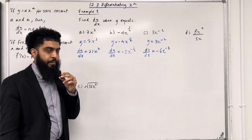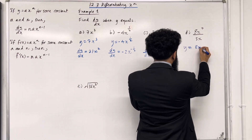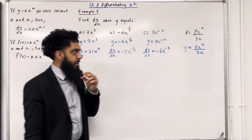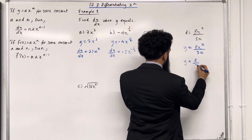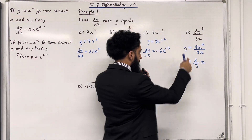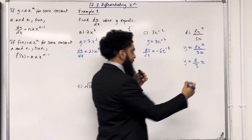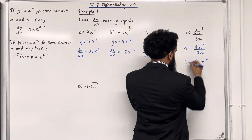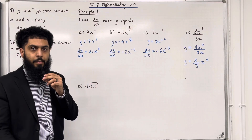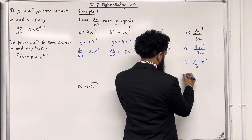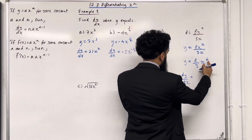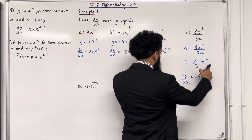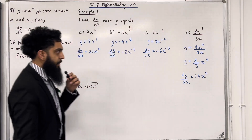Let's have a look at part D. We've got y equal 8x to the power 7 over 3x. Before we differentiate this, we need to simplify it using laws of indices. So y equals 8 over 3 times x to the power — since we're dividing with the same base, we subtract the powers: 7 minus 1 equals 6. So y equals (8/3)x⁶. Now dy over dx equals — bring down the power: 6 times 8 over 3 is 16, x to the power 6 minus 1, which is 5. This completes part D.